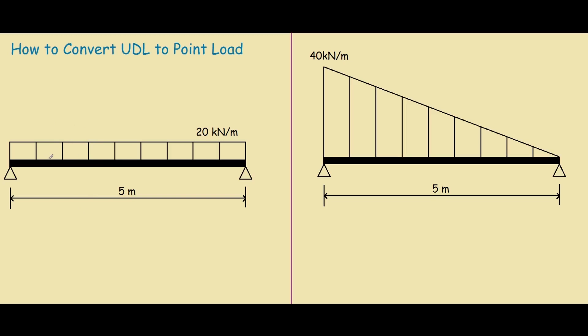So on our first example, we have a beam with a rectangular UDL of 20 kN per meter. As you can see, the units for this loading is kN per meter. For a point load, we want to convert it to a single force, so we want this to be kN.